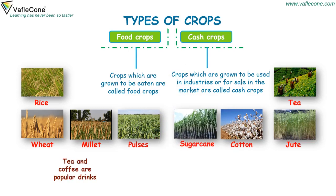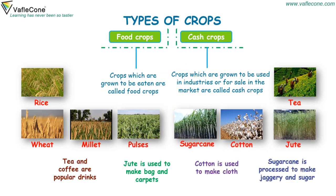Tea and coffee are popular drinks. Jute is used to make bags and carpets. Cotton is used to make cloth. Sugar cane is processed to make jaggery and sugar.